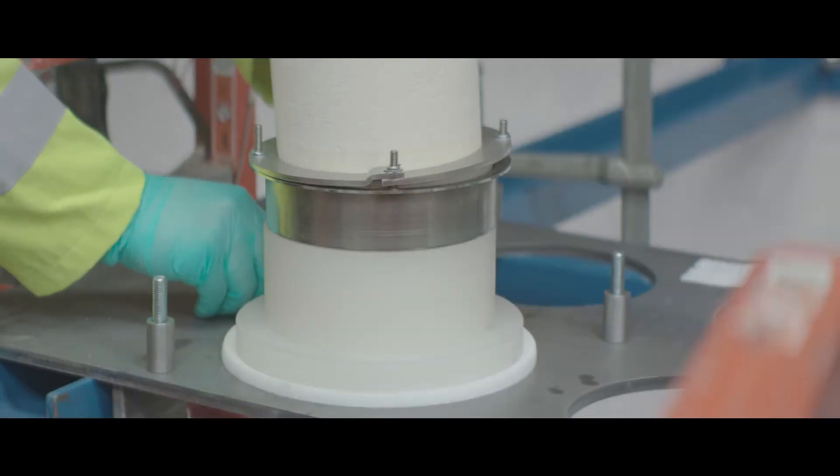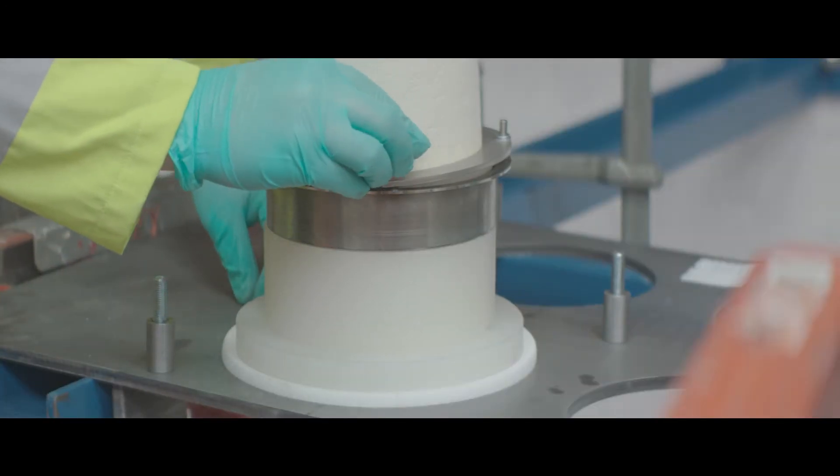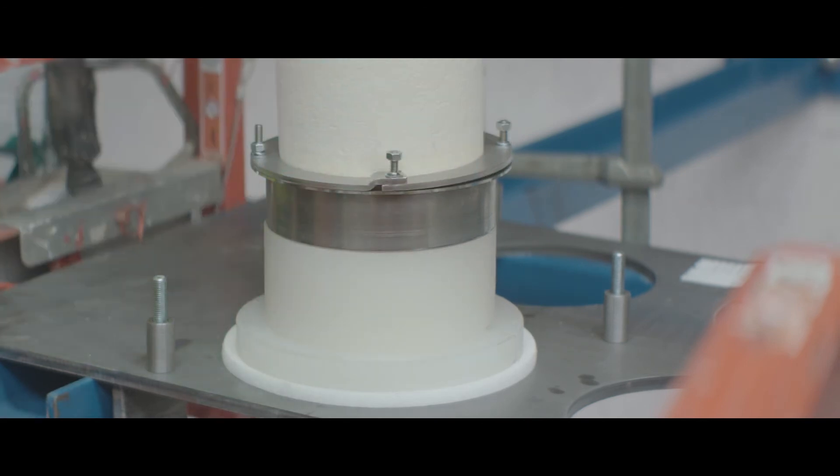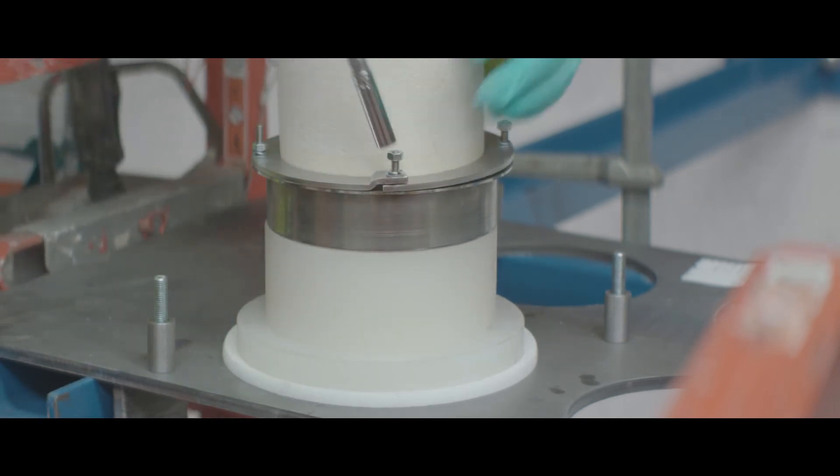Step 10: Secure the top flange to the coupling body with the 4 hex nuts provided. Once all 4 hex nuts are in place, torque the fasteners down.